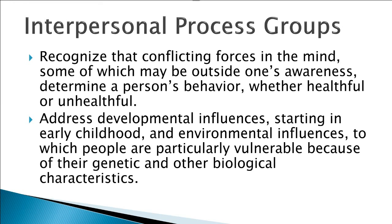Interpersonal process groups recognize that conflicting forces in the mind, some of which may be out of one's awareness, determine a person's behavior, whether healthy or unhealthy. These groups recognize that transference actually occurs - sometimes you see somebody and your spidey senses just go off and you don't know why. They help people understand that and how to deal with it. They also address developmental influences starting in early childhood and environmental influences to which people are particularly vulnerable because of their genetic and other biological characteristics. Social learning theory and ecological theory - what did people learn about coping from their peer groups, parents, and community about how to deal with life on life's terms?